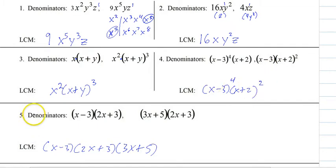And then for the next one, we have an X minus 3, a 2X plus 3, and a 3X plus 5. And their exponents are all 1, so they're all 1. And that's your LCM.